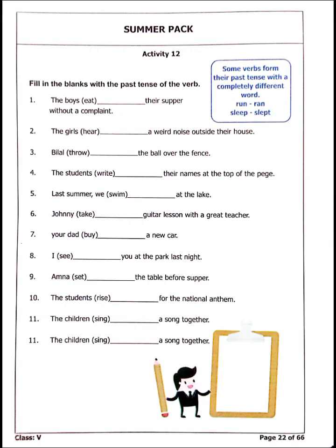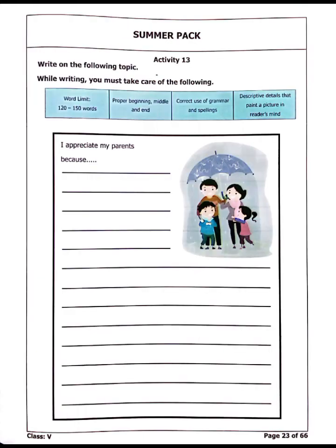In Activity 12, you have to write the past form of the given verbs. Some verbs form their past tense with a completely different word. For example, run becomes ran, sleep becomes slept. For the first blank: the boys eat — the second form of eat is ate. The second: the girls hear a weird noise outside their house — the past form of hear is heard. Similarly, you have to write the past forms of all the given words in the blanks.